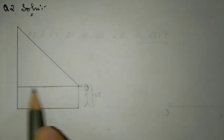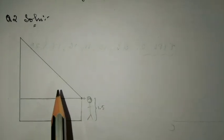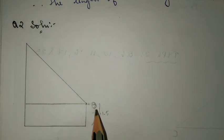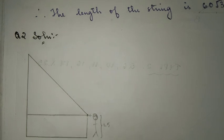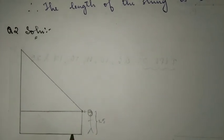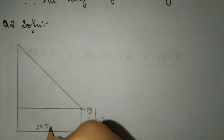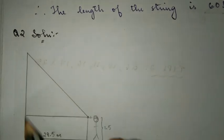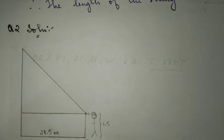In the question they've given that the height of the person is 1.5 meters. Now, the person is obviously standing on the ground, right? This is the chimney and the distance of the person standing from the chimney is 28.5 meters.